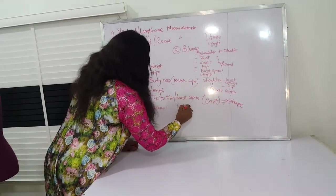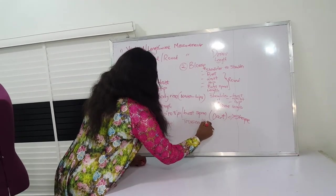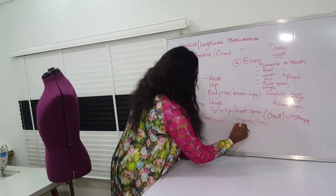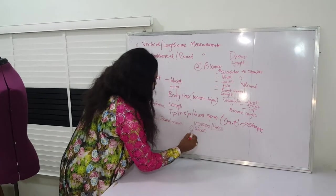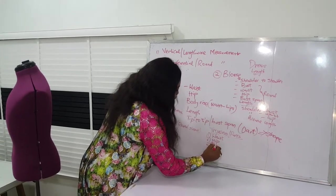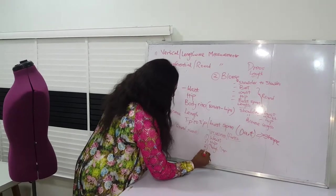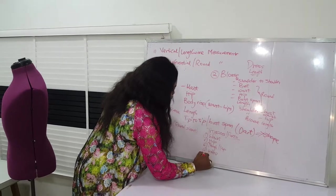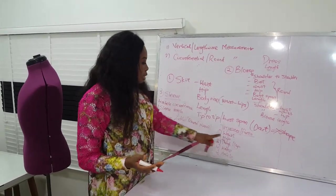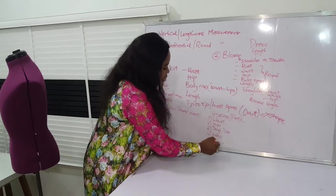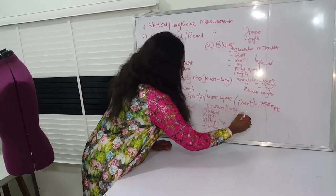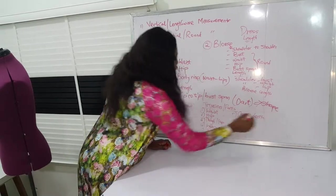For the trouser or pants measurement, we need the waist, the hip, the thigh or lap, the knee circumference, the ankle circumference — though if you're making shorts or a culotte you may not need the knee and ankle — and the crotch depth. These are the measurements needed for pants.